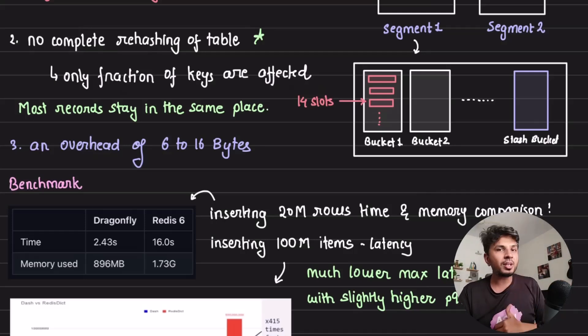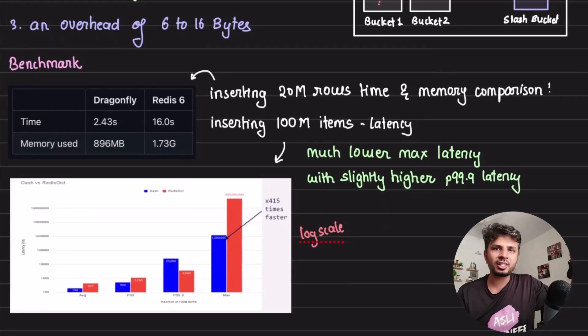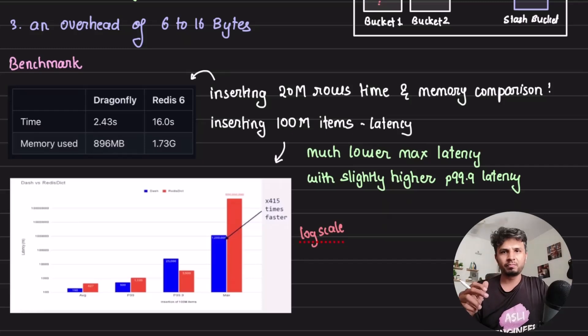That's the beauty of it. Now if you look at the benchmark, this is all theoretical. Let's look at the benchmark. For 20 million rows when they were inserting, this is taken from the DragonflyDB documentation. The time it took for DragonflyDB to insert is 2.43 seconds versus Redis 6 took 16 seconds.